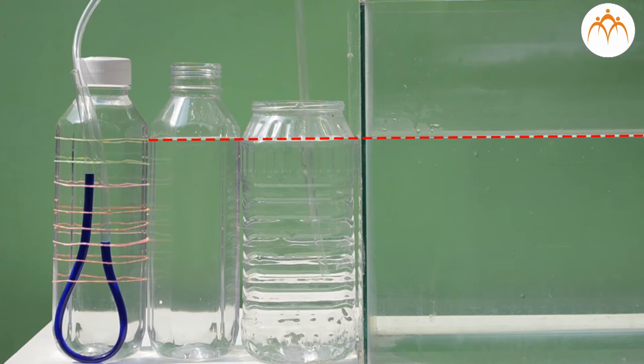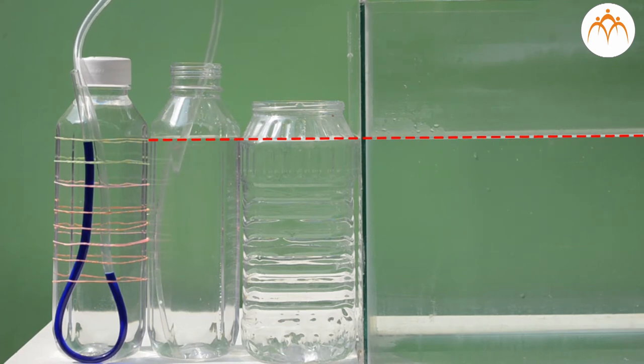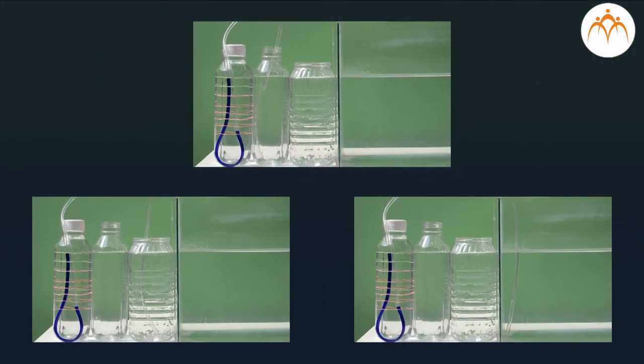When we dip our tube to the bottom of all containers, blue water level increased to a constant level. We can say that pressure at the bottom is dependent only on the height of the water and not on the shape of the container.